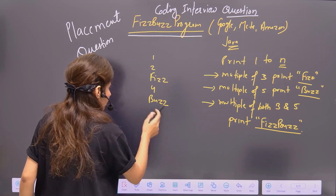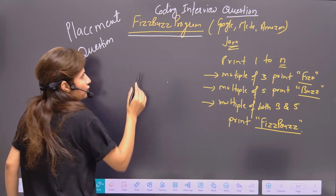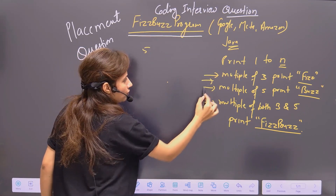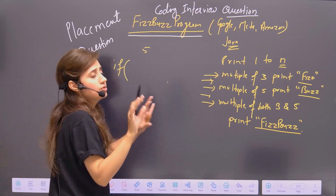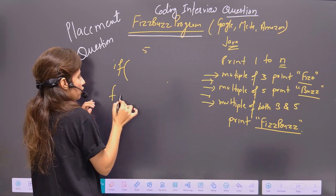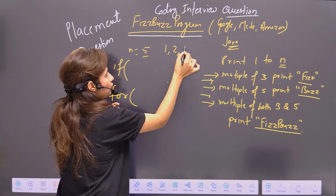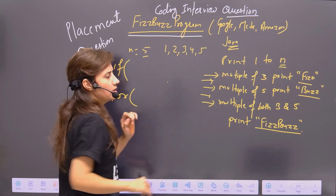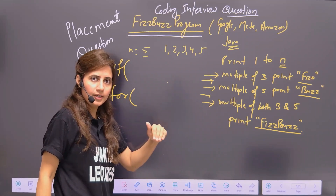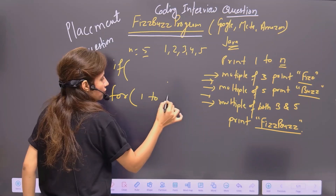Now let's discuss the logic. You might think it's very simple — and yes, it is — but it's a little bit tricky. Suppose the user has entered 5. You simply use if-else inside a for loop, because you need to check all numbers from 1 to N — checking which are multiples of 3, multiples of 5, or multiples of both.